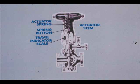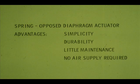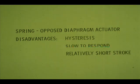Also locate the actuator stem, spring button, and travel indicator scale. The spring opposed diaphragm actuator is simple and rugged, therefore it requires little maintenance and doesn't need a constant source of air supply. However, it has some shortcomings: it has hysteresis or non-repeatability, the time it takes to travel from minimum to maximum stroke is relatively long, and its total stroke is relatively short.